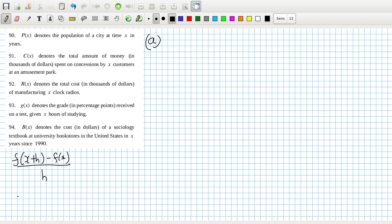And then the second part, the h goes to zero, so it would be the average change in population from x to x plus h per unit of time.